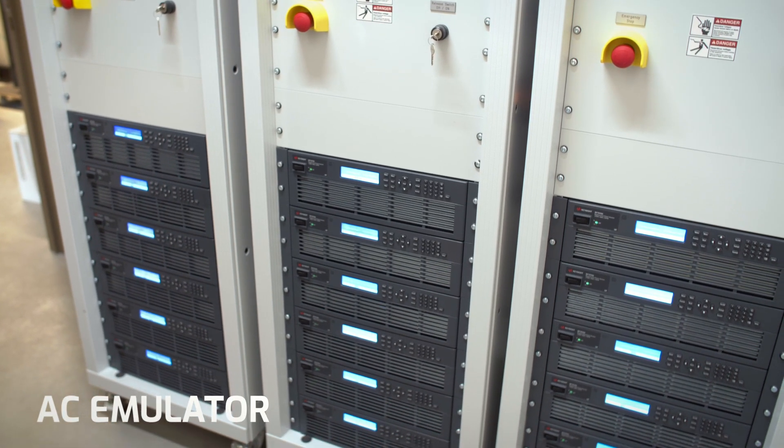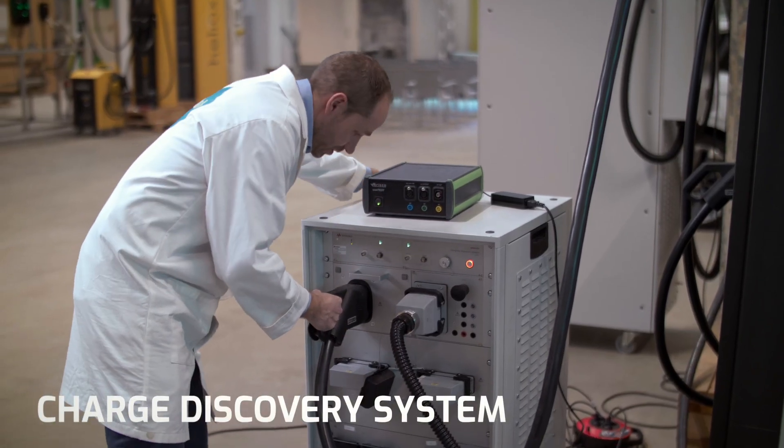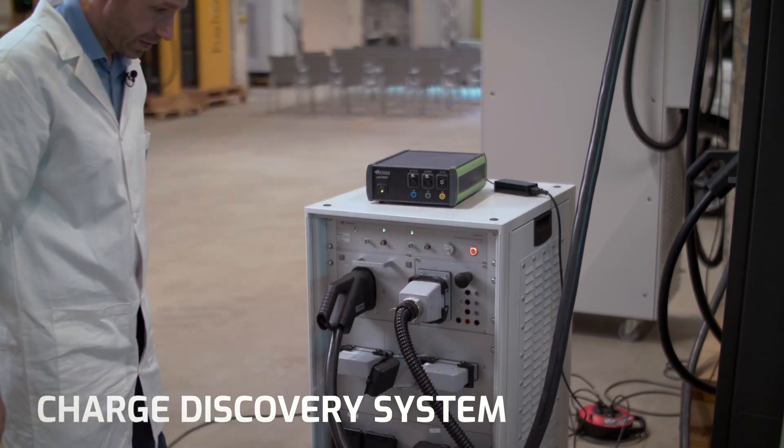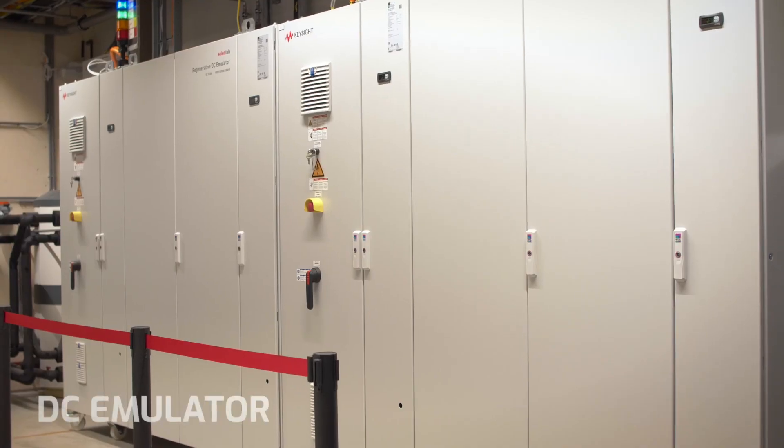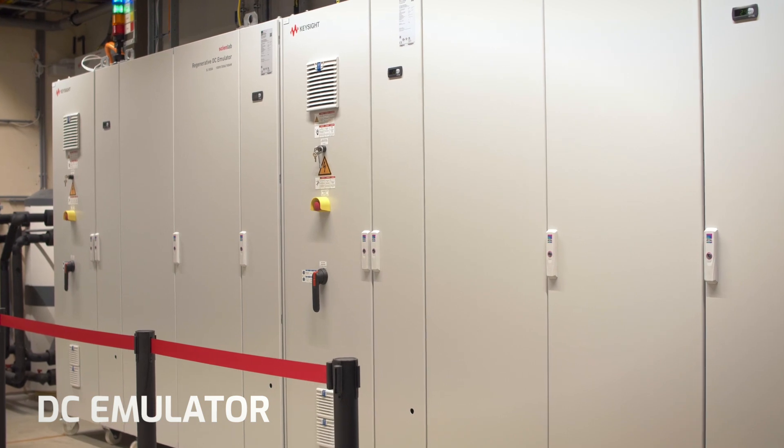The system consists of three parts. On the one hand, the electricity grid that you're emulating, on the other hand, the emulator of the electric vehicle or the charging station, and then we have the emulators that are emulating the DC power, so they're emulating a battery or emulating the power from a DC charger.